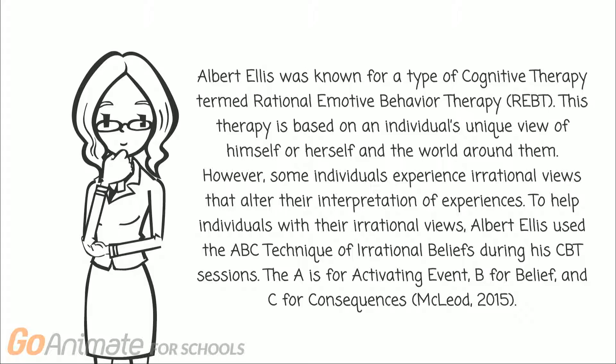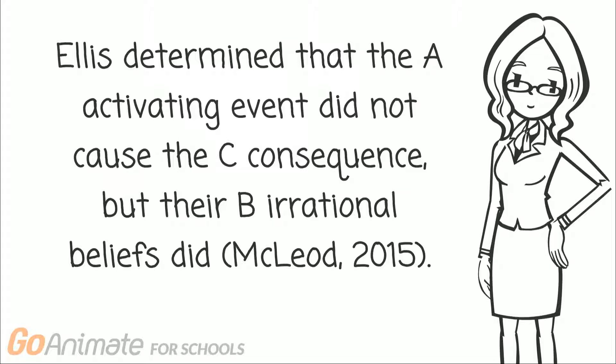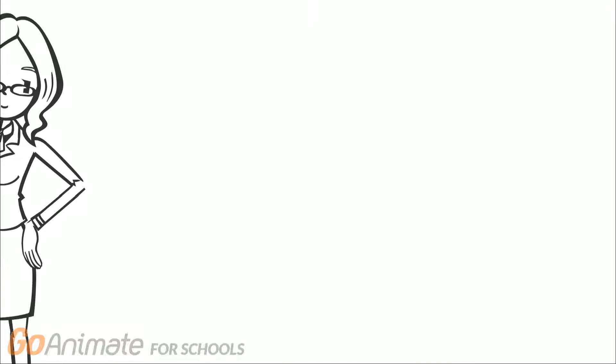The A is for Activating Event, B for Belief, and C for Consequences. Ellis determined that the A activating event did not cause the C consequence, but their B irrational beliefs did.